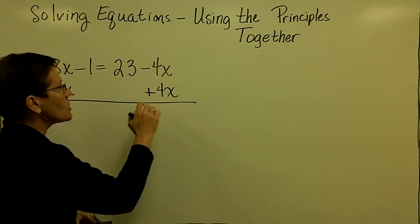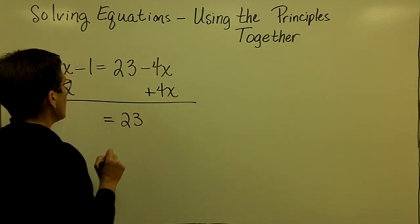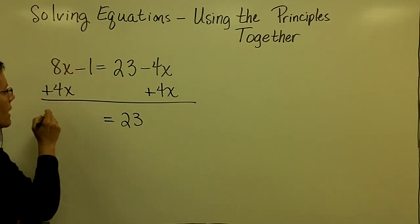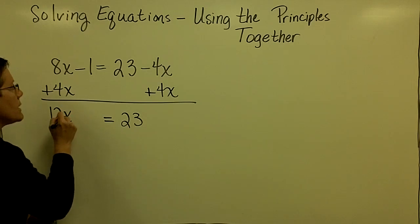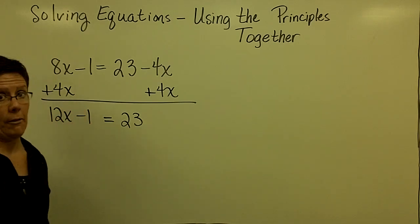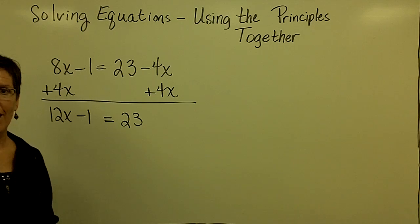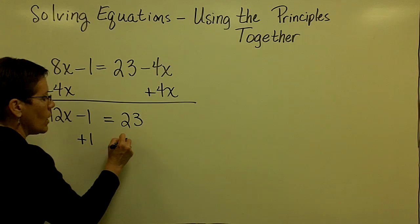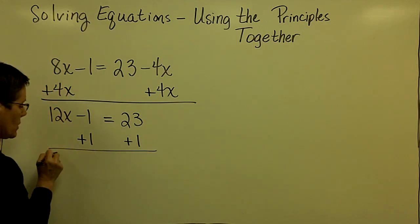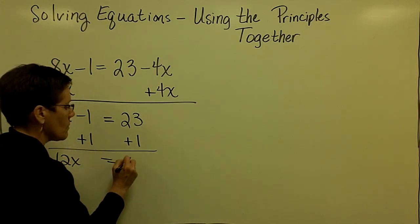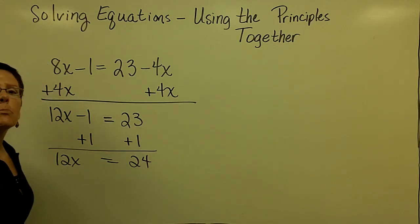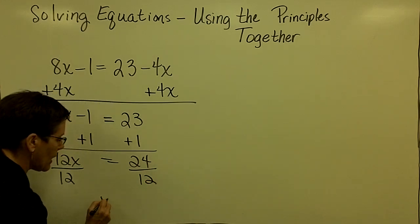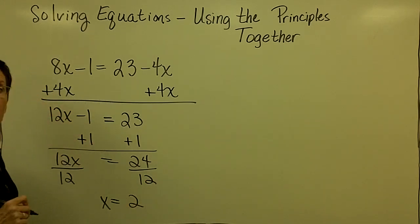That gets rid of the x term over here and it just leaves the 23 on the right side. I collect those two like terms, 8x and 4x adds to be 12x. And now I'm in a position where I don't have choices. I have to add 1 to both sides. Then finally I use the multiplication principle last. In this case, I'm going to divide both sides by 12 and find out that x is equal to the number 2.